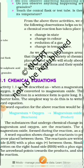Welcome to Babitha Science Tutorial. Let's start the second part of Chapter 1 of Class 10 Science and CRT Science. In the previous topic, we discussed about chemical reactions with three activities and the characteristics of chemical reactions. Today we will start a new topic: the chemical equation.